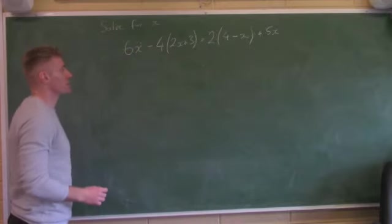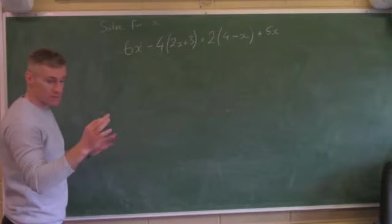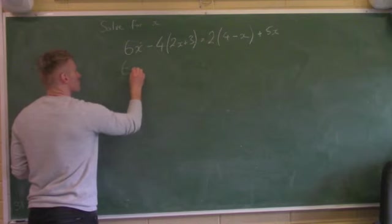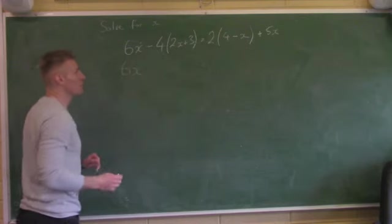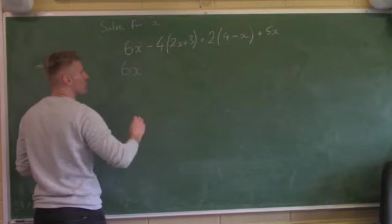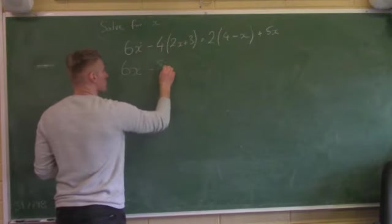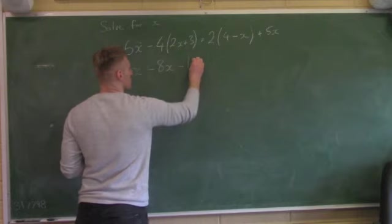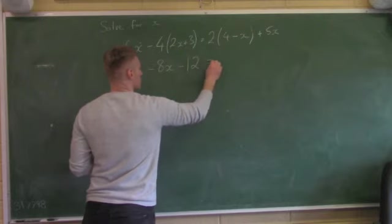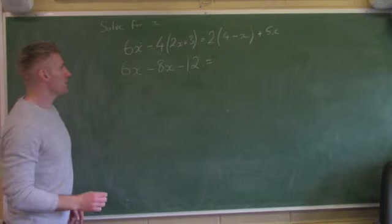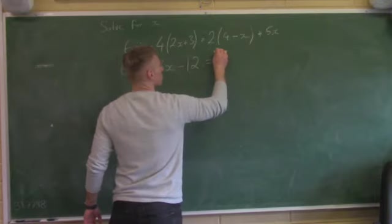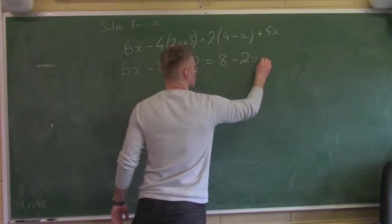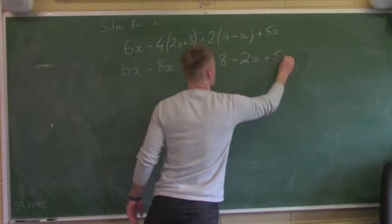Let's multiply this out first. 6x stays as 6x. Brackets mean multiply, so minus 4 by 2x gives minus 8x, and minus 4 by 3 gives minus 12. On the other side: 2 by 4 is 8, 2 by minus x gives minus 2x, plus 5x.